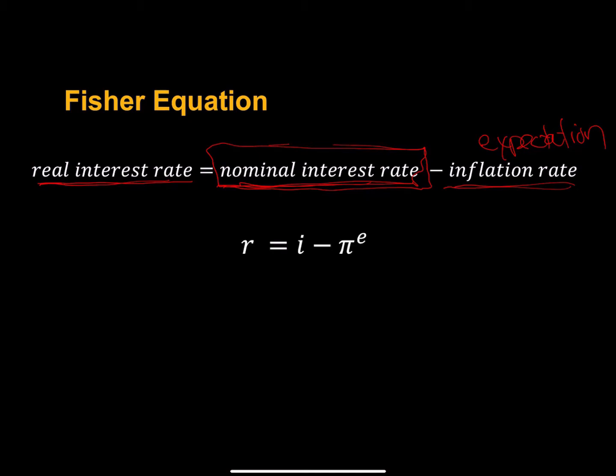So sometimes we write the Fisher equation this way: the real interest rate equals the nominal interest rate minus the expected rate of inflation. We can rearrange this equation so that the nominal interest rate is what we're really getting or paying plus the inflation rate that we are expecting. This is an identity.